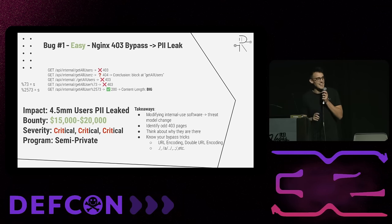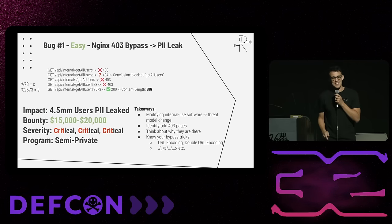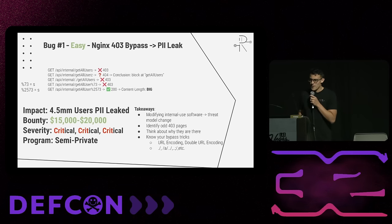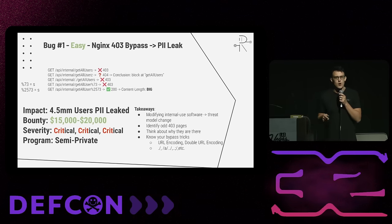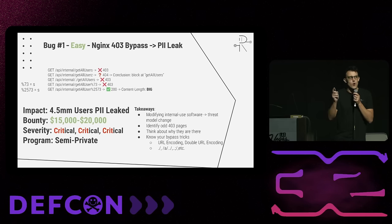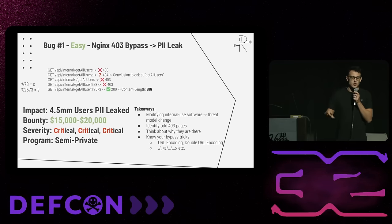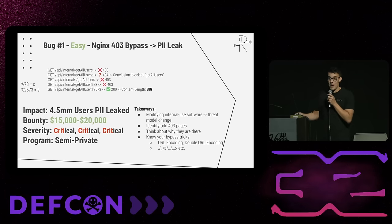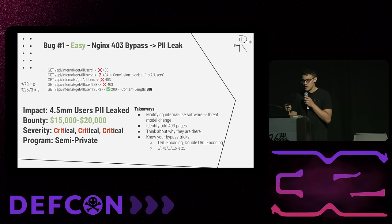I'll give you ranges because the actual numbers can disclose the programs. The takeaways: the change to threat model, identify odd and out-of-place 403 pages — those can imply when a route is getting blocked by a reverse proxy and might be bypassable via normalization tricks. There was an amazing talk by someone at PortSwigger earlier today on path traversal and normalization. Know your bypass tricks: URL encoding, Unicode encoding, path traversal, et cetera.